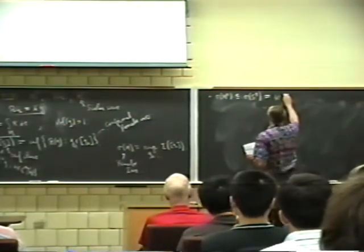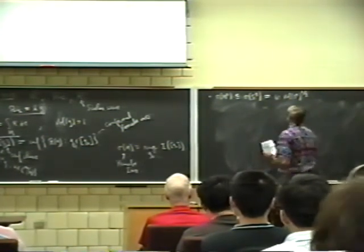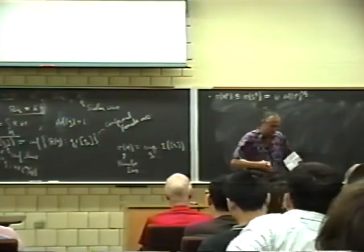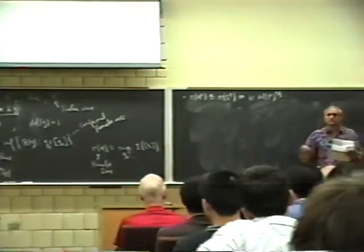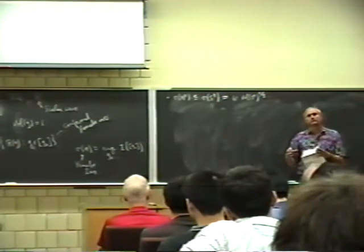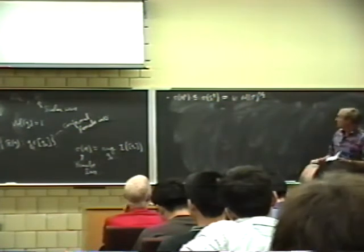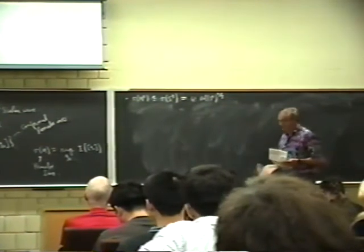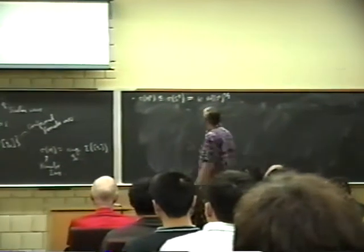Generally, the Yamabe invariant is some function of the volume of a possibly non-existent Einstein metric on the manifold. You hope to construct an Einstein or constant curvature metric—it may or may not exist—and the idea is that this should be the volume of such a metric if it did exist. Here the volume is normalized to be one.